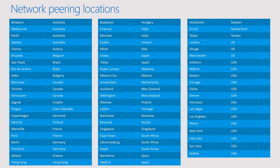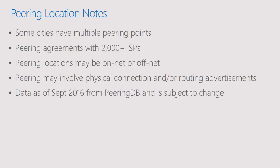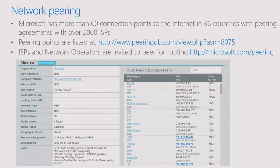These are internet exchanges — places like Equinix — where people like AT&T, Verizon, BT, and Comcast have routers. They hand traffic between each other, and Microsoft sits in there and says, 'get anything for Microsoft, give it to us here and we'll take it from here.' That data is from a site called PeeringDB which I'll give you a link to. You can look it up yourself using our ASN network number 8075, and if you click into a location you can see which other ISPs are in that same location and see if yours is there.